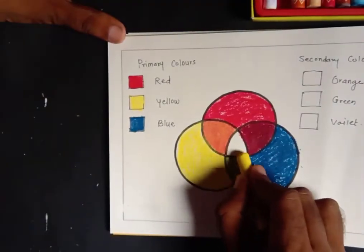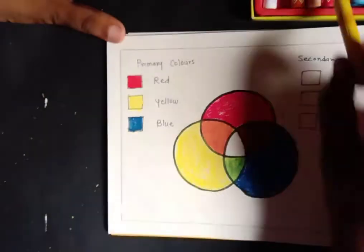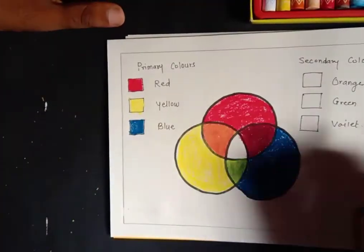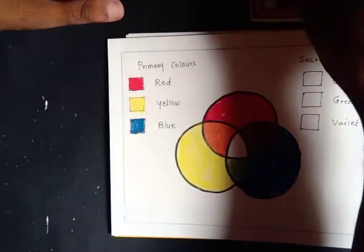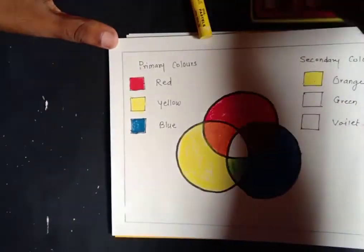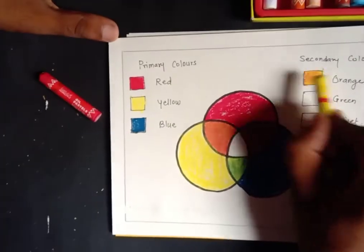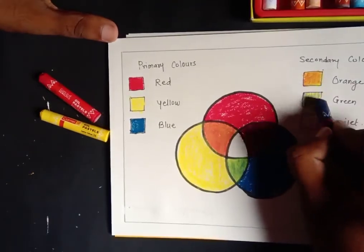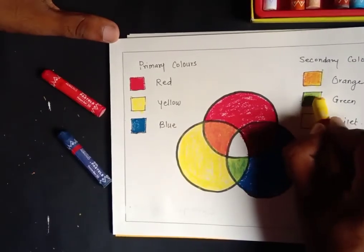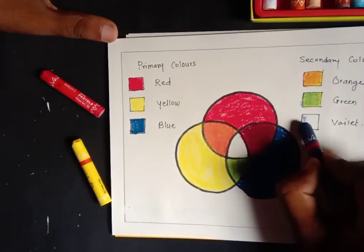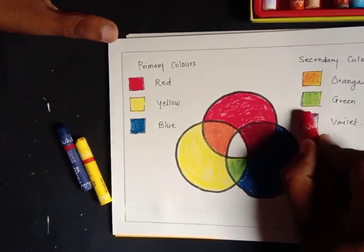So here we get three secondary colors: yellow plus red equals orange, yellow plus blue equals green, and blue plus red equals violet.